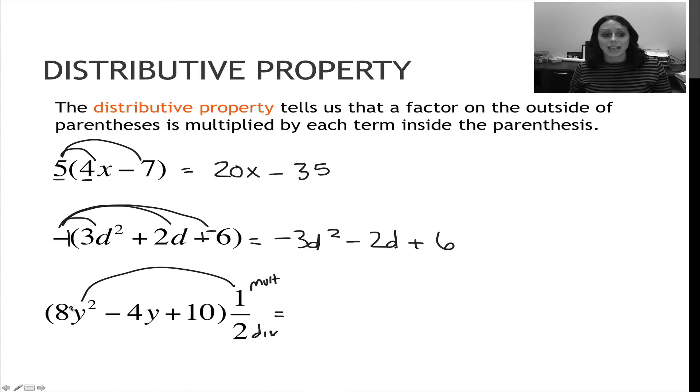So 1 times 8 is 8, divided by 2 is 4. So my answer is 4y squared. And then 1 times negative 4 is negative 4, divided by 2 is negative 2. So negative 2y or minus 2y. And then 1 times 10 is 10, divided by 2 is 5. There's my final answer.